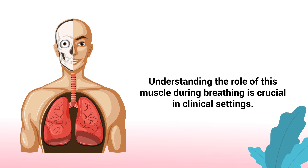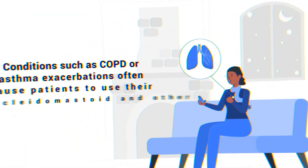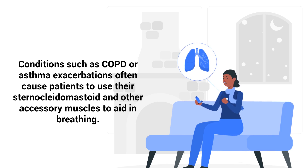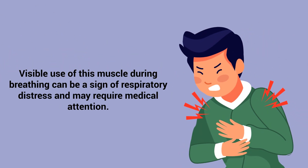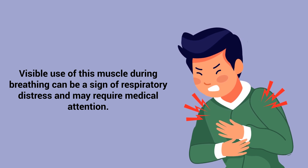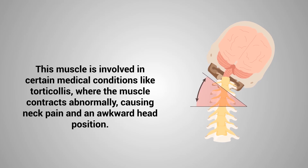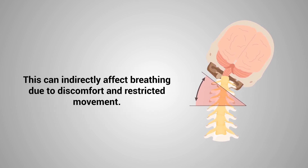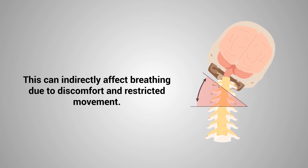Understanding the role of this muscle during breathing is crucial in clinical settings. Conditions such as COPD or asthma exacerbations often cause patients to use their sternocleidomastoid and other accessory muscles to aid in breathing. Visible use of this muscle during breathing can be a sign of respiratory distress and may require medical attention. Additionally, this muscle is involved in certain medical conditions like torticollis, where the muscle contracts abnormally, causing neck pain and an awkward head position, which can indirectly affect breathing due to discomfort and restricted movement.